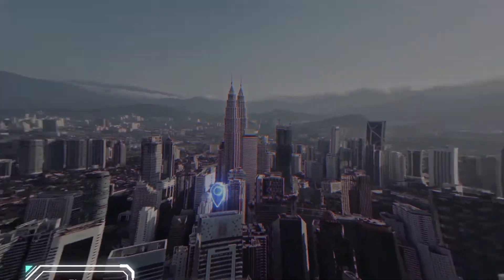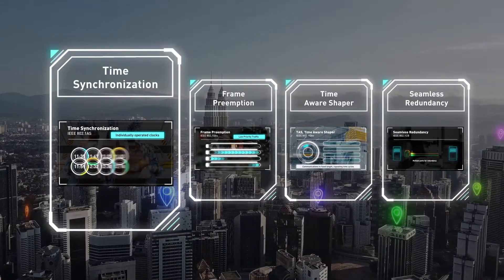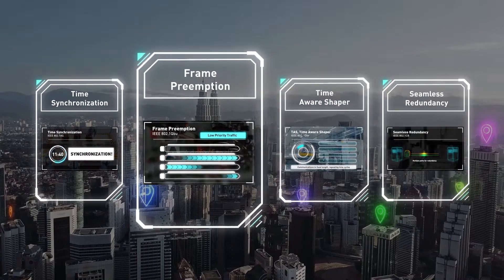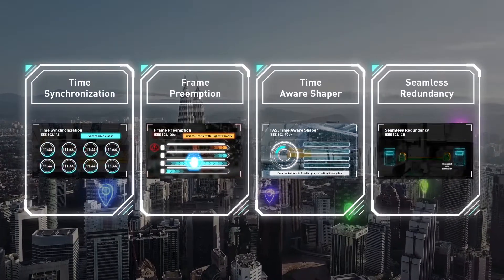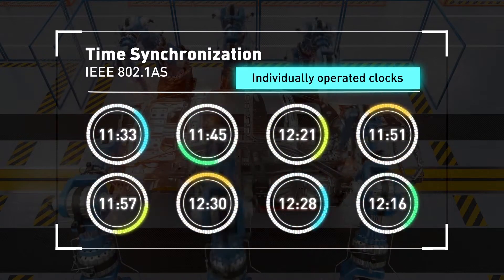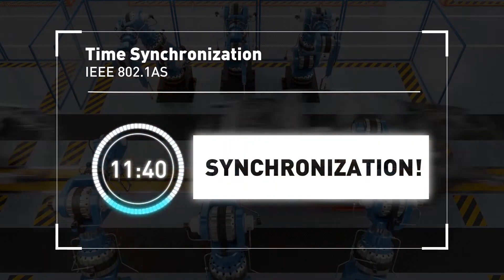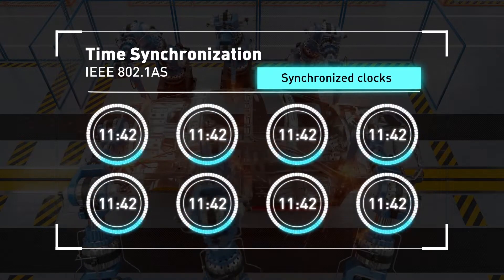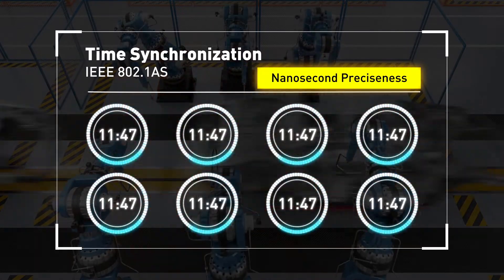Four classic features and benefits that TSN brings to its users are time synchronization, frame preemption, time-aware shaper, and seamless redundancy. One: time synchronization. Real-time communication with strict time boundaries requires devices to have a common time reference. Through synchronized clocks, it is possible for all devices to operate in unison and execute the operation at exactly the required point in time.